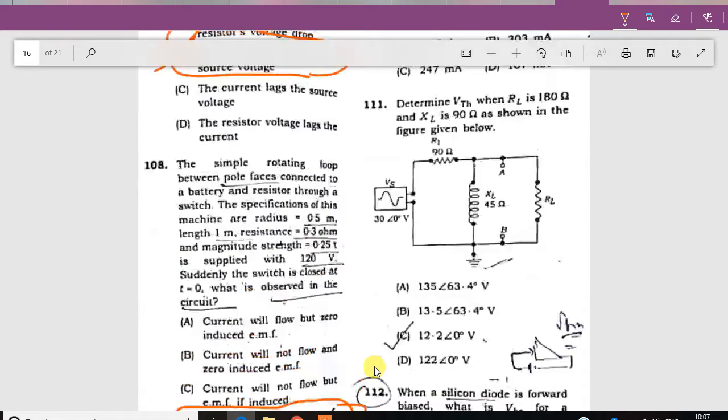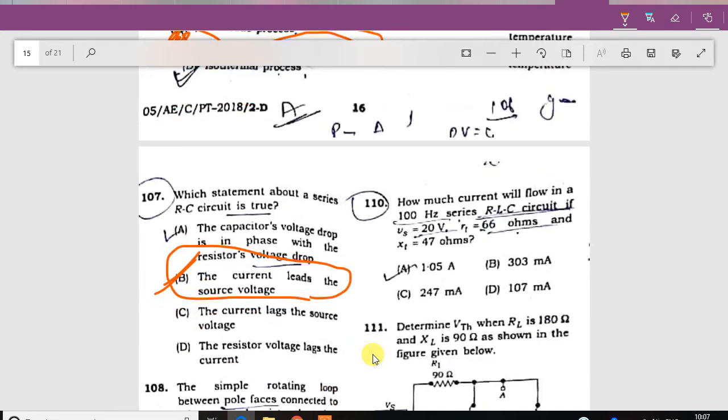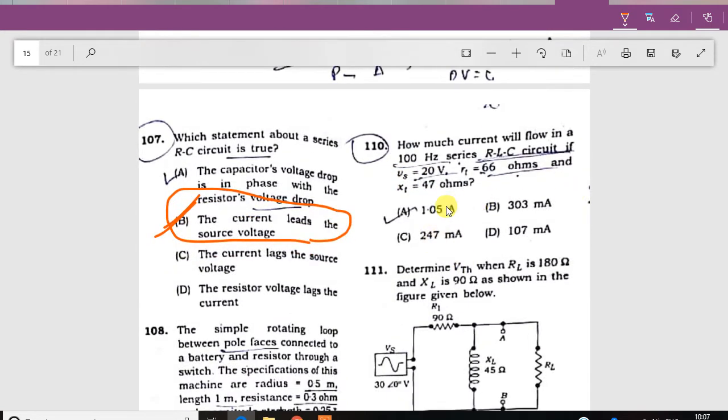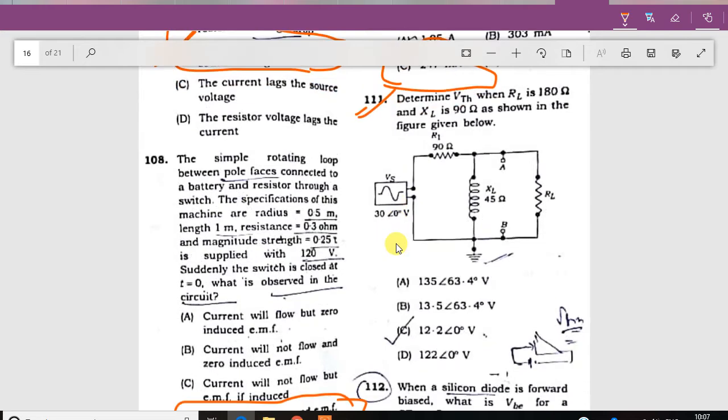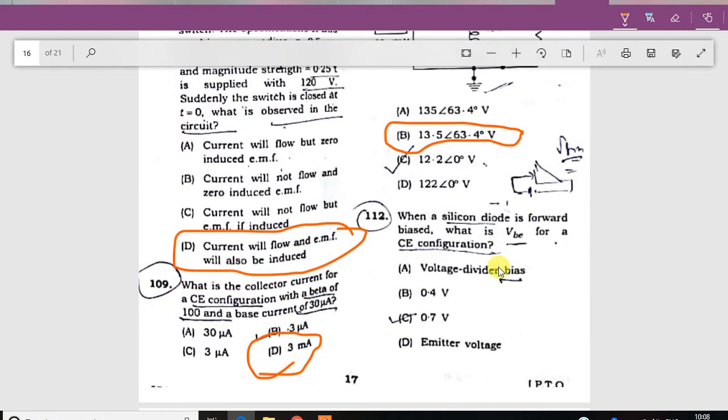How much current will flow in the 100 ohm series RLC circuit? V equals this solution. The answer is 2.247 milliampere. The answer is B.